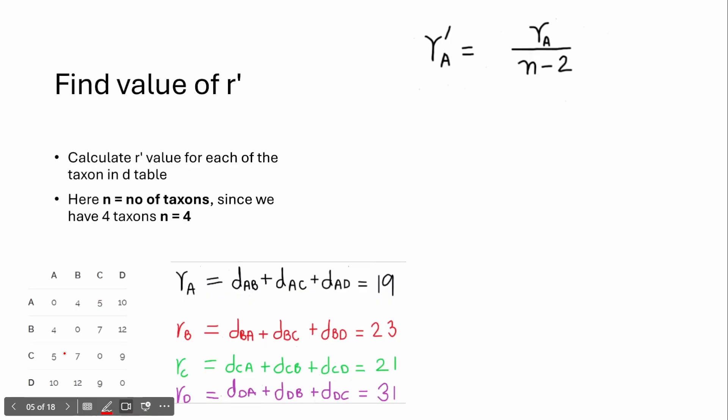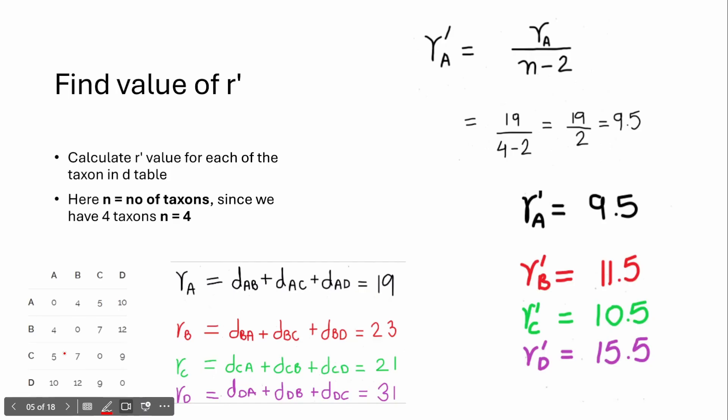Similarly, we can find R values for R_B, R_C, and R_D. Our next step is to find R' (R dash). R' is equal to R divided by N minus 2, where N is the number of taxons. Since we have 4 taxons, we divide R by 2. So R_A' = 19 / 2 = 9.5. Similarly, the R' values for the other taxons are 9.5, 11.5, 10.5, and 15.5.